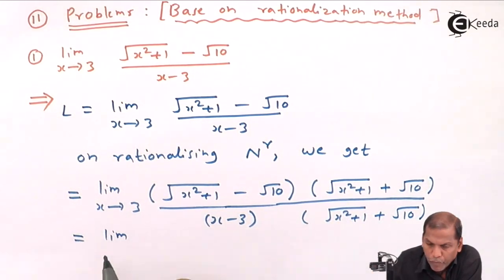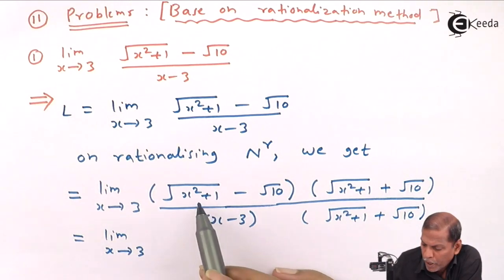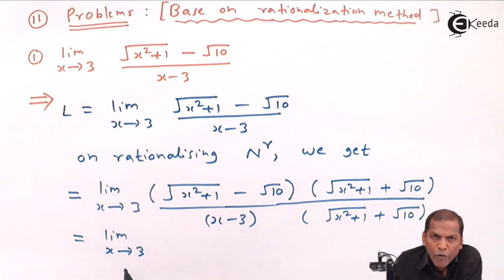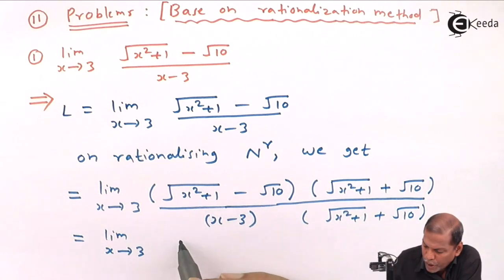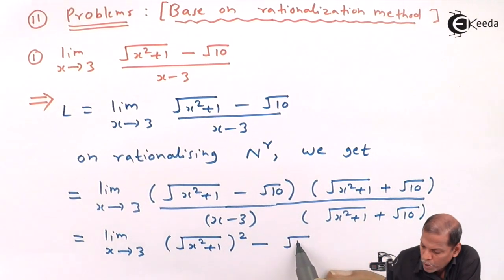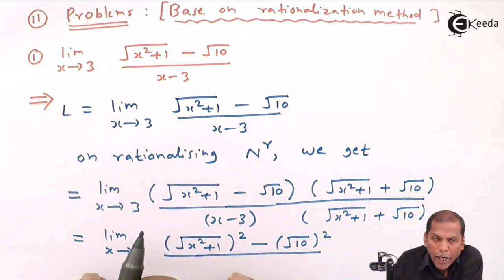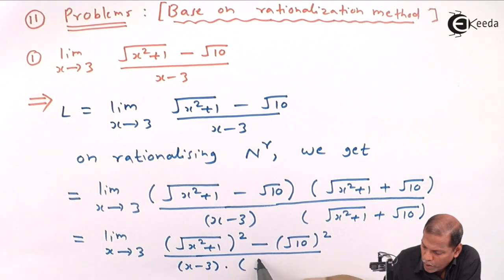This equals limit x tends to 3. Now here the numerator is of the type a minus b times a plus b, so by using that formula the result is a squared minus b squared — the square of the first term minus the square of the second term. That is, square root of x squared plus 1, whole bracket squared, minus square root of 10, whole bracket squared, all divided by x minus 3 into the rationalizing bracket.